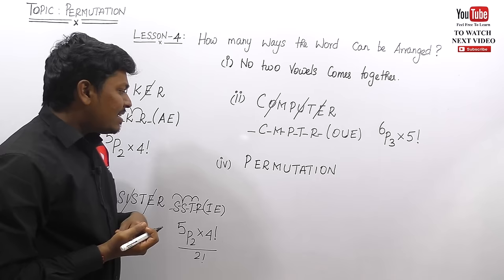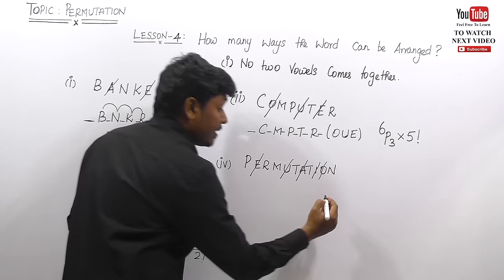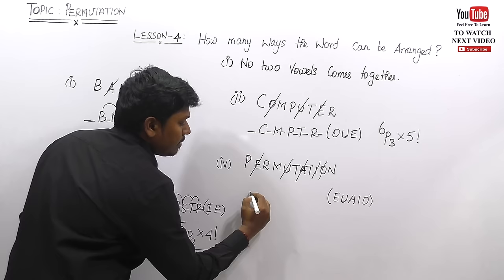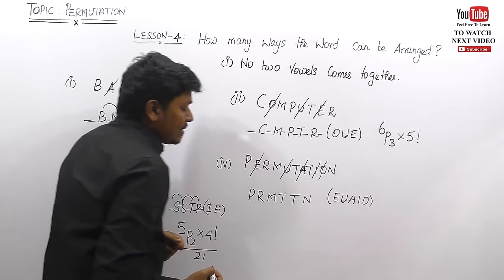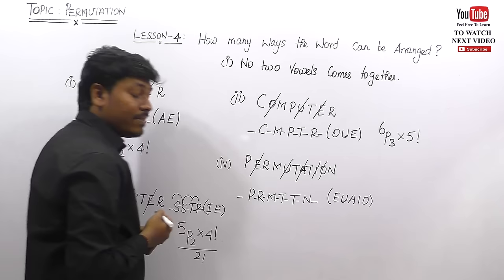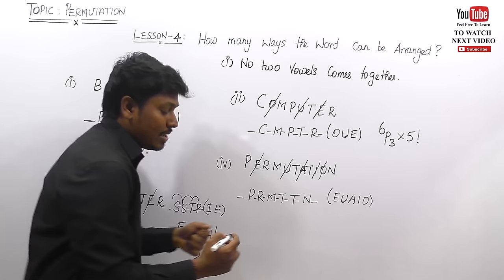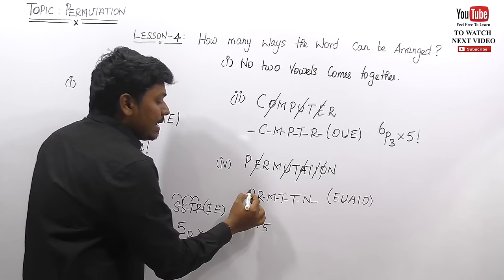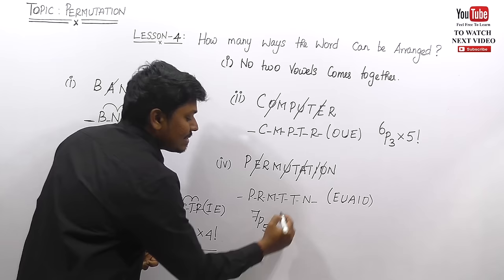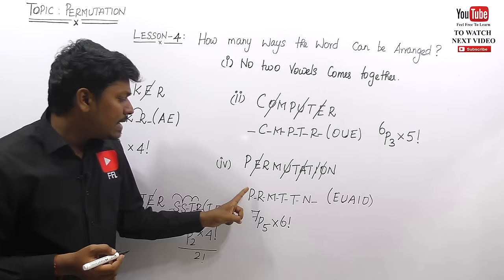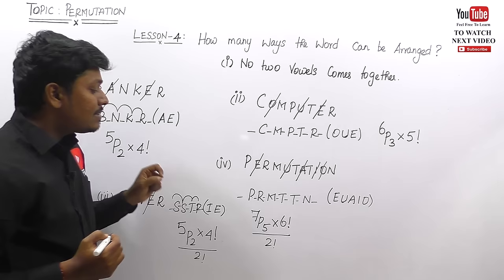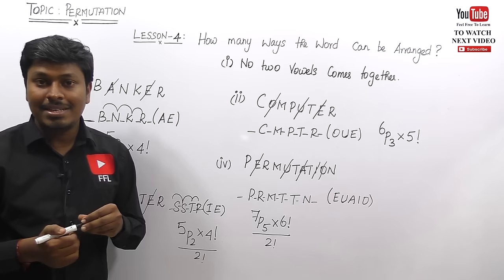Fourth example: the word PERMUTATION. Vowels are E, U, A, I, O — five vowels. Remaining consonants are P, R, M, T, T, N — six consonants. Count the gaps: seven places. Place five vowels in seven positions: 7P5. The six consonants can be arranged in 6 factorial ways, but T is repeated twice, so divide by 2 factorial. Final answer: 7P5 × (6 factorial ÷ 2 factorial).